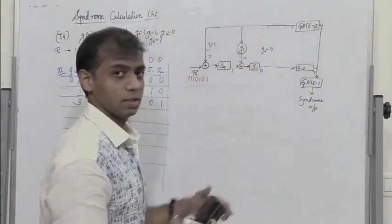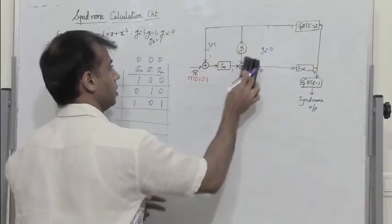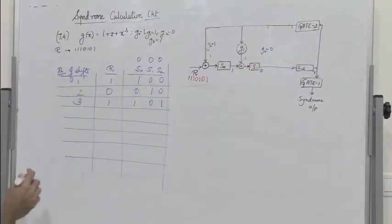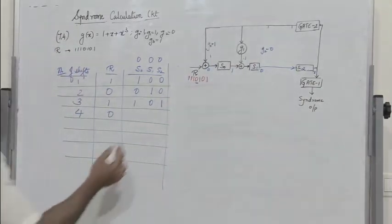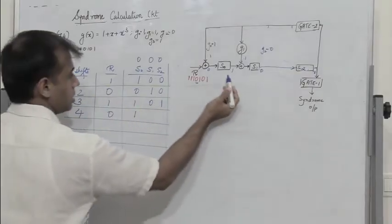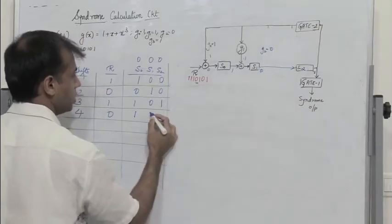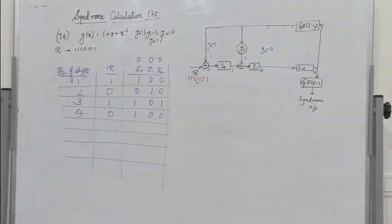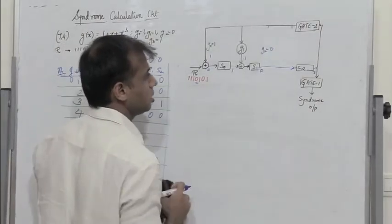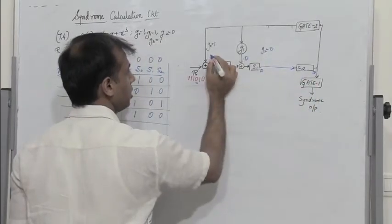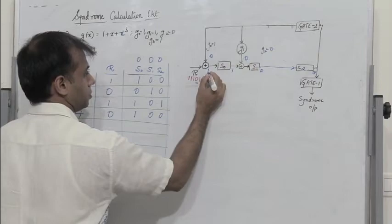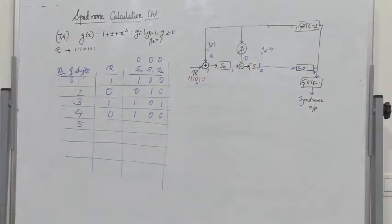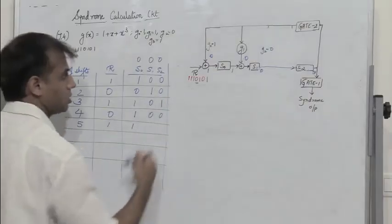During shift 4, the received bit is 0. With feedback 1, the input to S0 is 0 XOR 1 = 1. The previous S0 output is 1, so S1 gets 1 XOR 1 = 0. S2 takes the previous state of S1, which is 0. After shift 4, the outputs are 1, 0, 0. During shift 5, the received bit is 1. With feedback 0, S0 gets 1 XOR 0 = 1, and S1 gets 1 XOR 0 = 1.